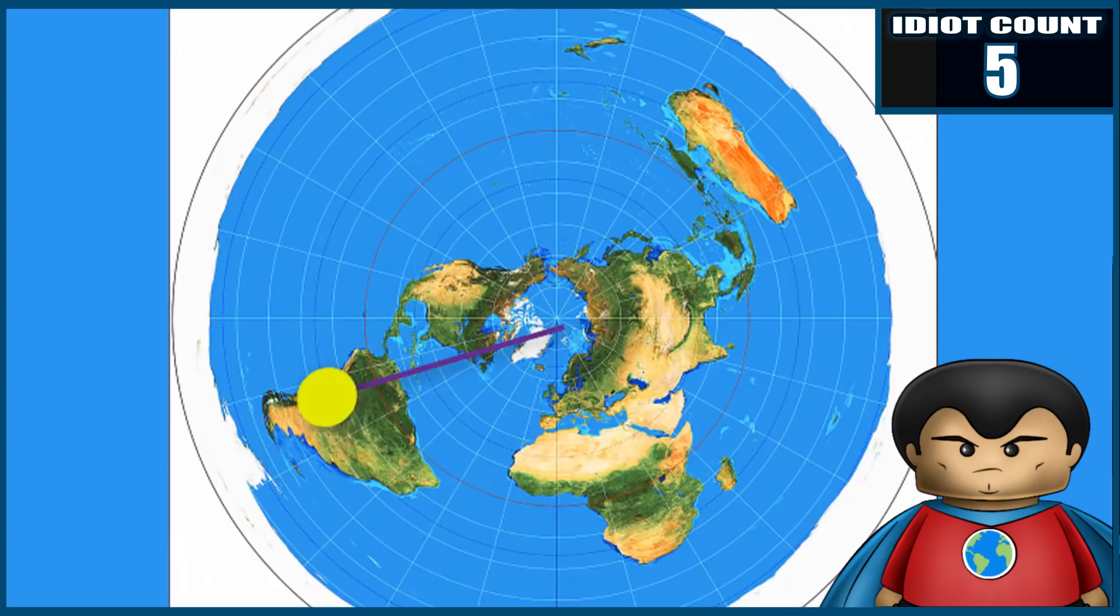As I've said before, the Tropic of Capricorn is 70% further from the North Pole than the Tropic of Cancer is. Therefore the circumference of the Tropic of Capricorn is also 70% bigger, and for the sun to complete 360 degrees over the Tropic of Capricorn, it would need to travel 70% faster than it would over the Tropic of Cancer.